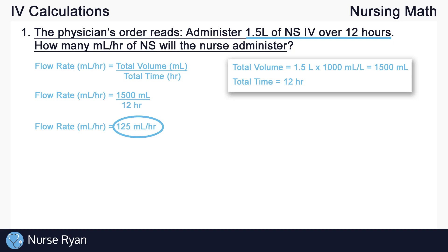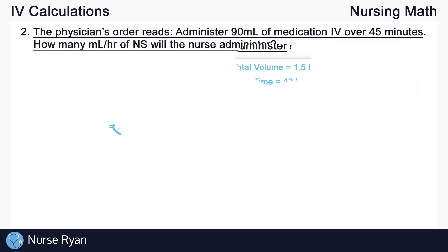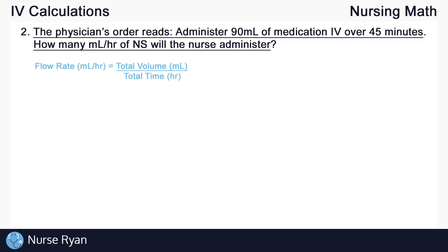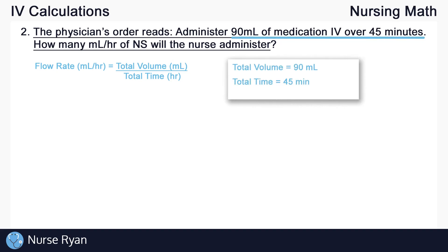Moving on to question number two, which will be slightly more difficult than the first. The physician's order reads: administer 90 milliliters of medication IV over 45 minutes. How many mils per hour of medication will the nurse administer? We're looking for the same thing as question one — flow rate in mils per hour. So let's write out our formula: flow rate in mils per hour equals total volume in milliliters divided by total time in hours. Before filling in values, we need to ensure the units match up. We have 90 milliliters, which matches, but we're given 45 minutes instead of hours.